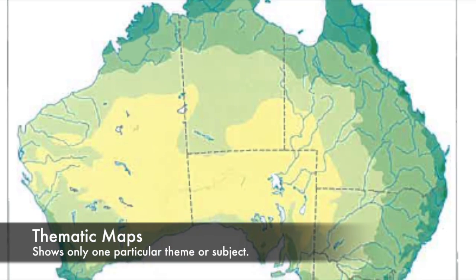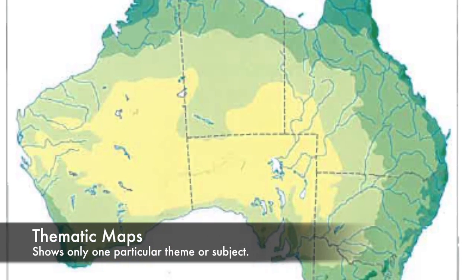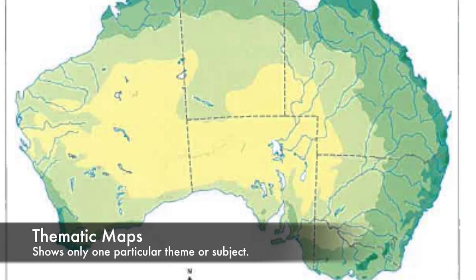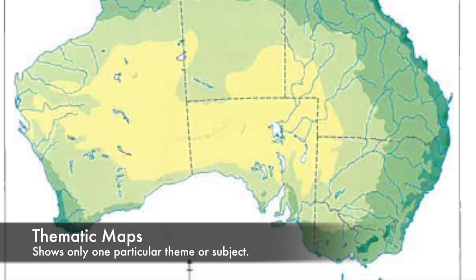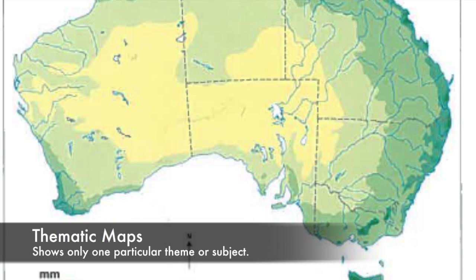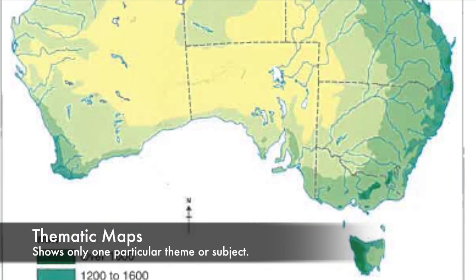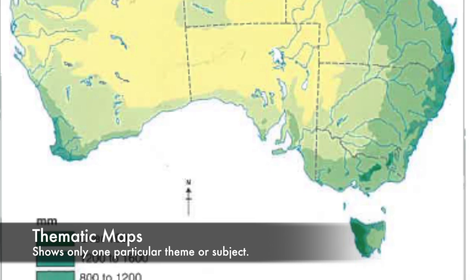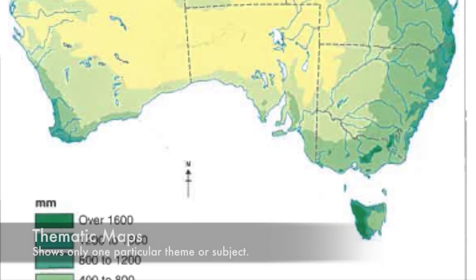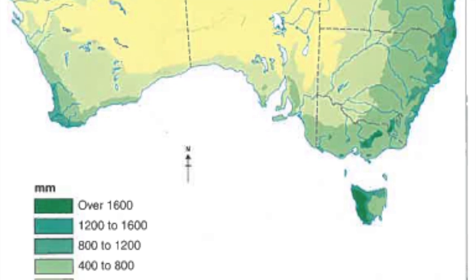Thematic maps show only one particular theme or subject. For example, climate, population, or heritage sites.